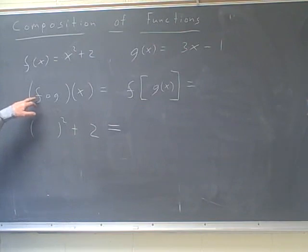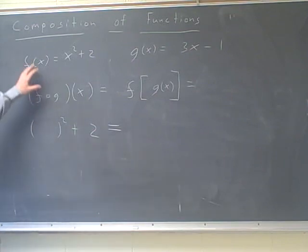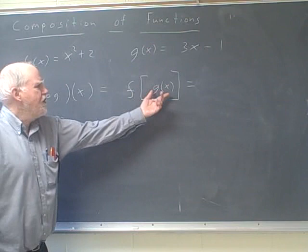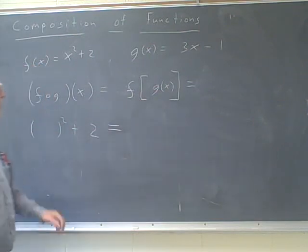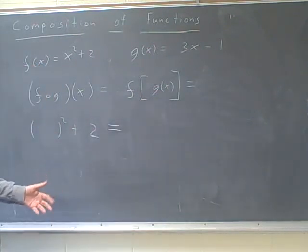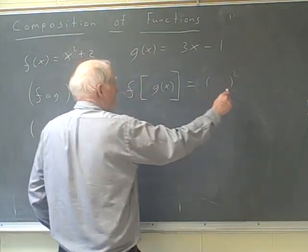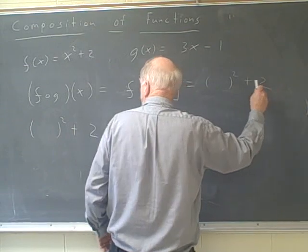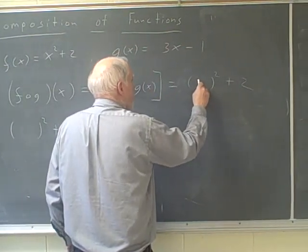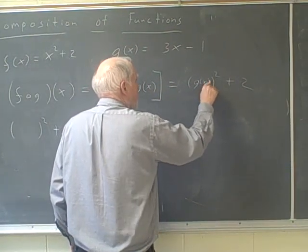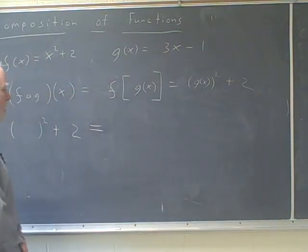And so we're going to find the composition f of g of x. Now, what does that really mean? Well, it means we take our function f and we put g inside of f. And how I do this is I write f of blank, without anything in it, plus 2. And I'm going to put g(x) in here. Put g(x) inside and square it and add 2.